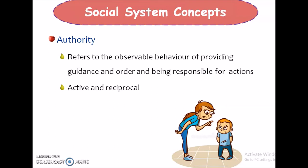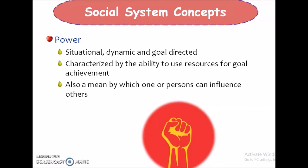Next is authority. Authority refers to the observable behavior for providing guidance and order and being responsible for action. The authority is very active and it can be reciprocal also. Next is power. Power is a situational, dynamic and goal-oriented concept, characterized by the ability to use resources for goal achievement. Power is also the means by which a person can influence others.